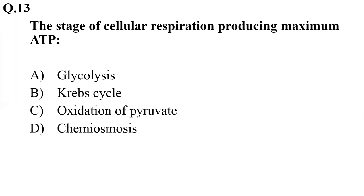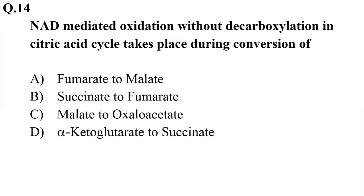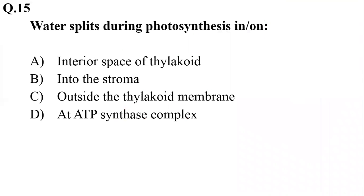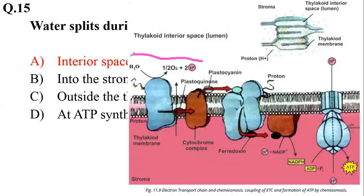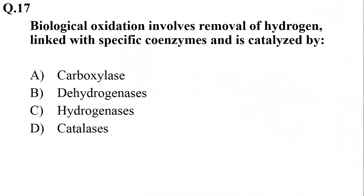The stage of cellular respiration that produces the maximum ATP is chemiosmosis, during which NADH and FADH2 are oxidized to release energy and form ATP. Question 14: NAD-mediated oxidation without decarboxylation in the citric acid cycle takes place during the conversion of malate to oxaloacetate during the last step — oxidation without release of CO2. The rest of the process releases CO2. Water splits during photosynthesis on the interior side of the thylakoid space where photolysis occurs.